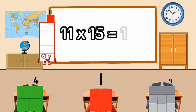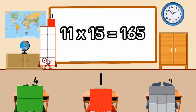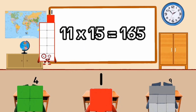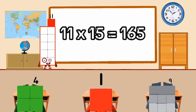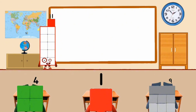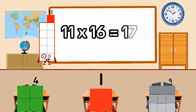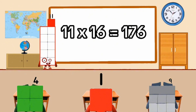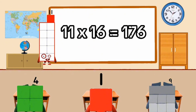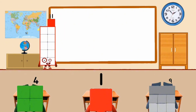11 times 15 equal 155. 11 times 16 equal 176.